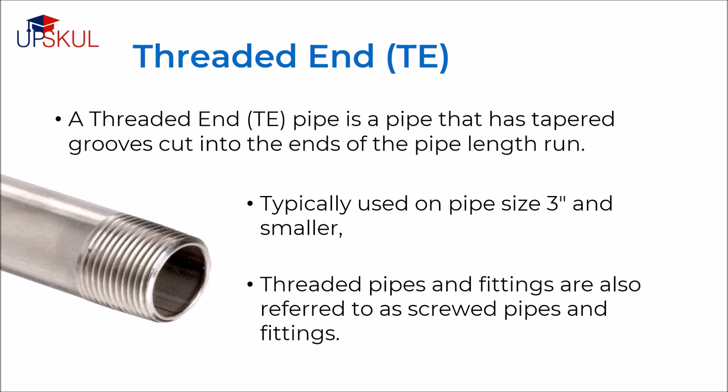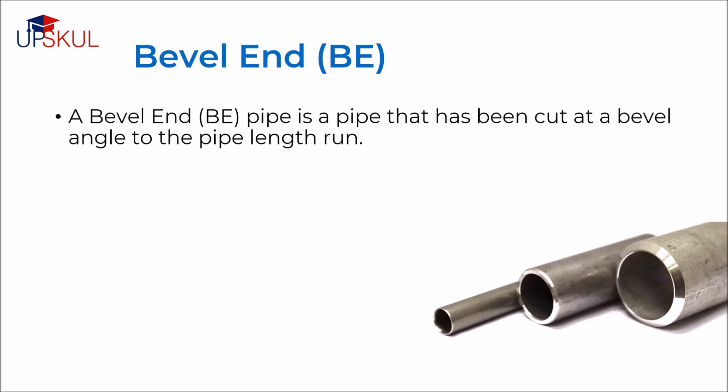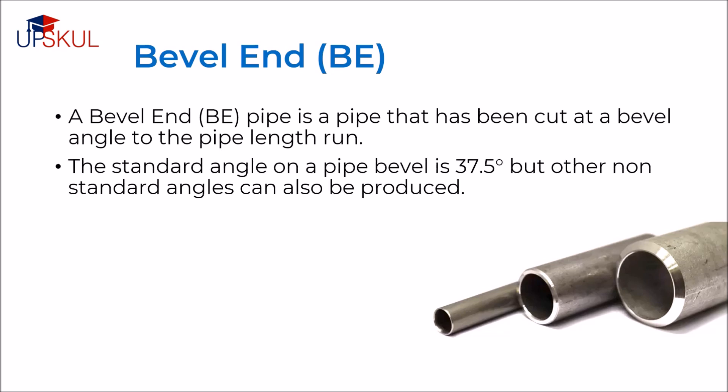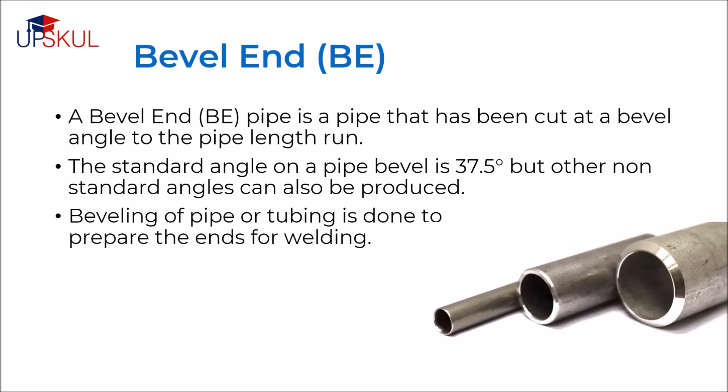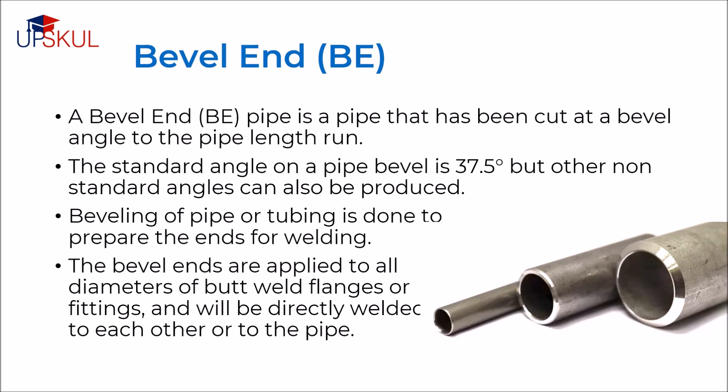Threaded pipes and fittings are also referred to as screw pipes and fittings. They can easily be assembled without welding or other permanent means of connection. Threaded pipes and fittings have threads that are either male or female. Male threads are cut into the outer surface of the pipe while female threads are cut into the inner surface of the pipe. As threaded pipes and fittings are assembled, two pieces are pulled together, and the distance that is pulled together is called the thread engagement. A bevel end pipe is a pipe that has been cut at a bevel angle to the pipe length. The standard angle on the pipe bevel is 37.5 degrees, but other non-standard angles can also be produced. Beveling of a pipe or tubing is done to prepare the ends for welding. Bevel ends are applied to all diameters of butt weld flanges or fittings and will be directly welded to each other or to the pipe.